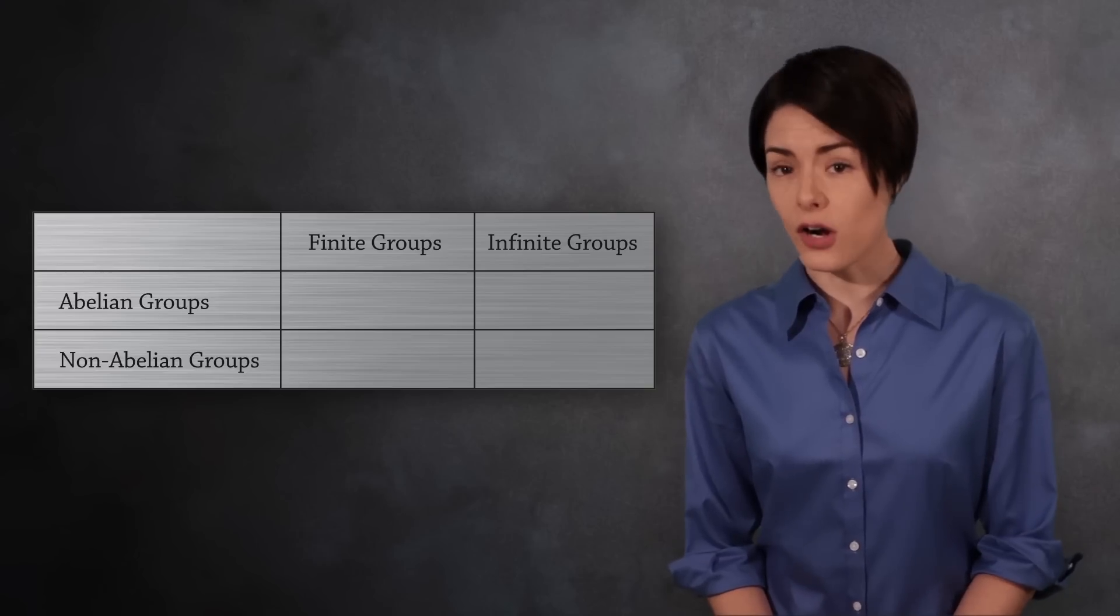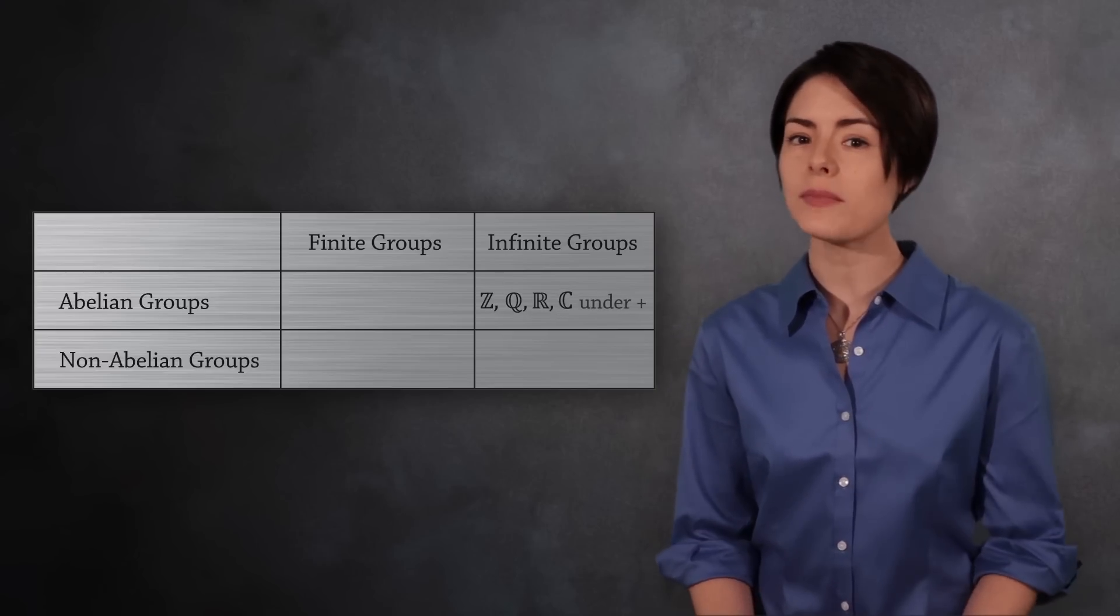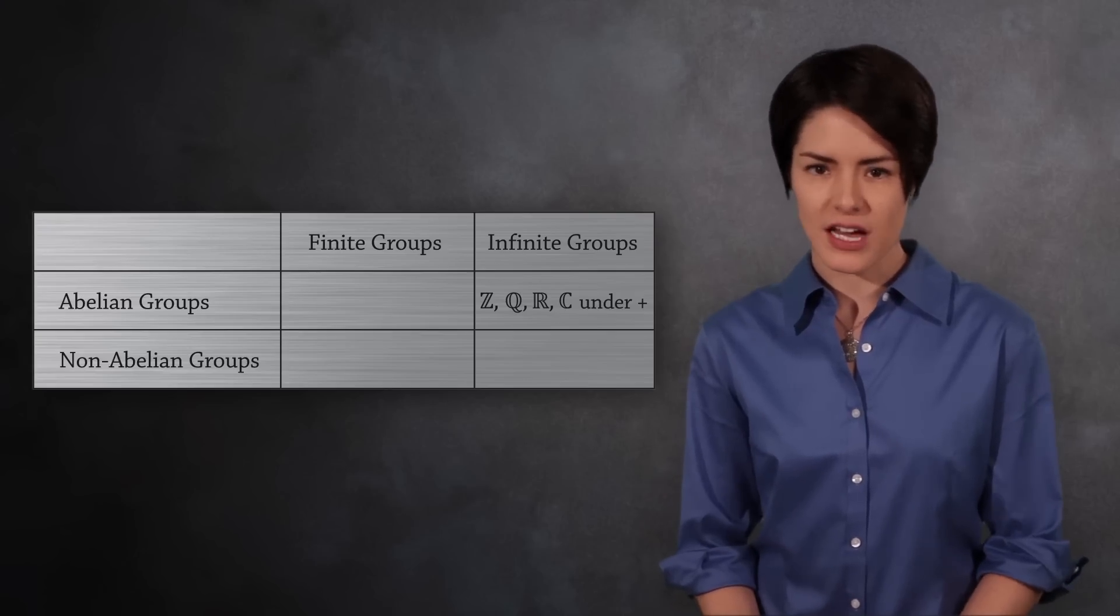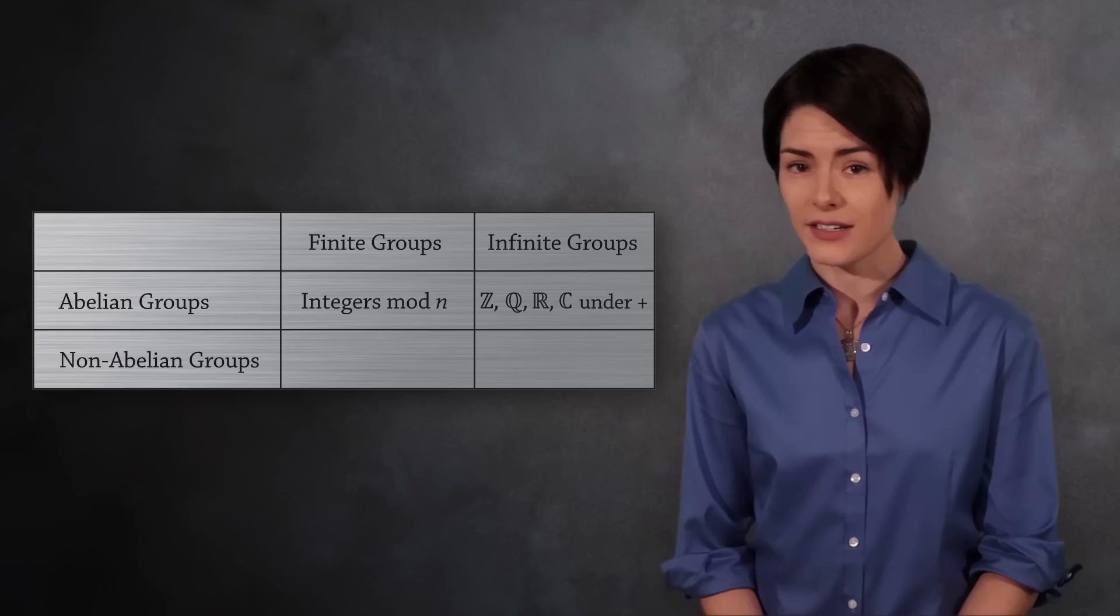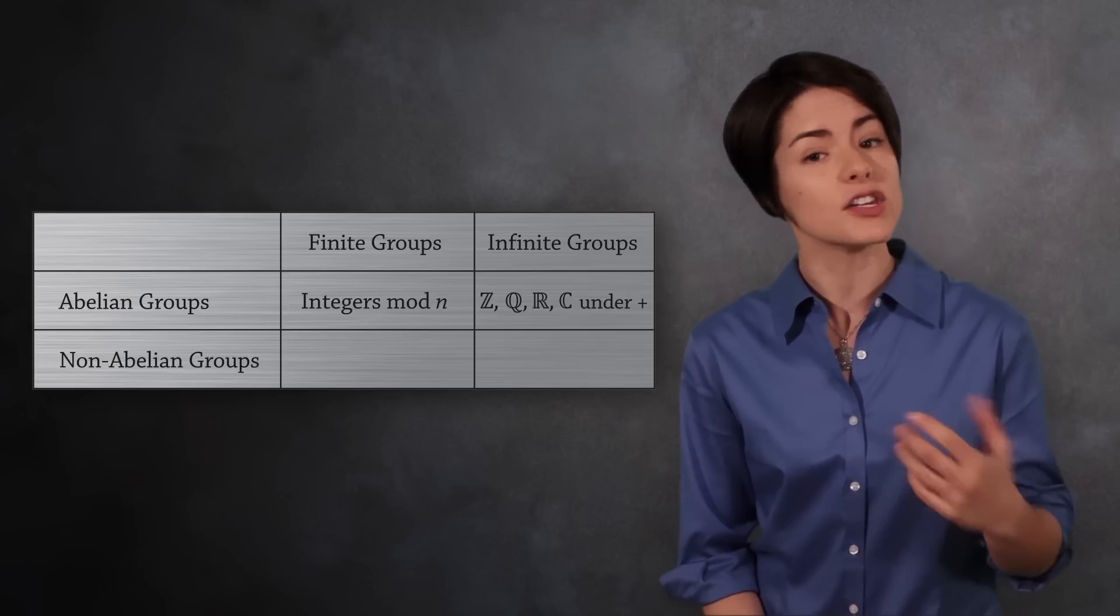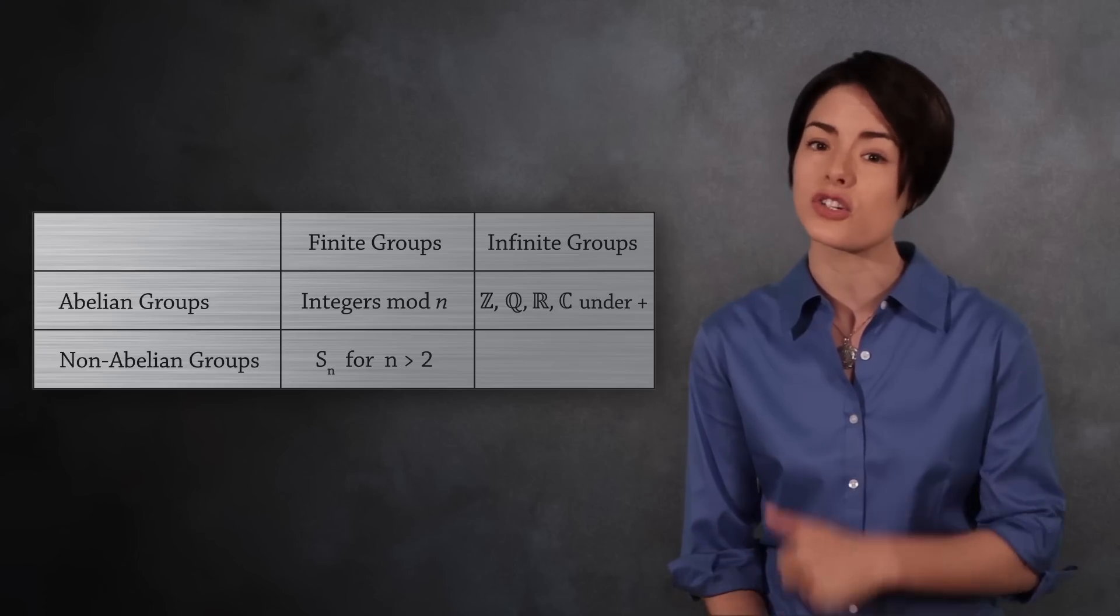Some infinite groups that are abelian are the integers, rational numbers, real numbers, and complex numbers under addition. A common finite group that's abelian is the integers mod n under addition. A classic example of a finite non-abelian group is a symmetric group Sn when n is larger than two.